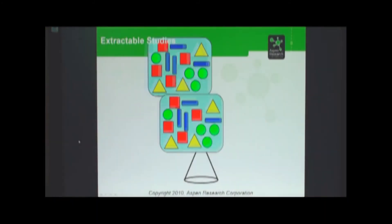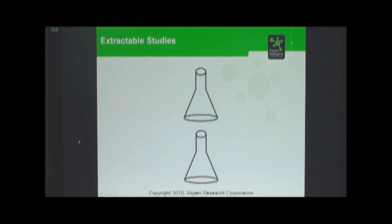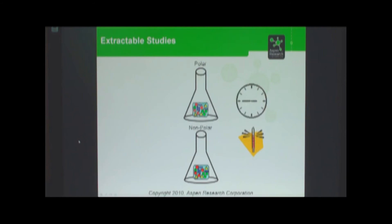Then you can question how long to do the extraction and under what conditions. The conditions we talk about usually are temperature, duration of the extraction, which solvent, and at what temperature. Once you've done the extraction, you've got compounds that may have moved from the polymeric base into your extracting solvent, and then you have to use analytical chemistry techniques to see what compounds moved and, if a compound did move, how much of it.